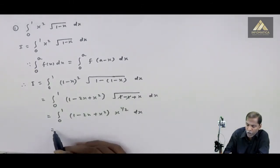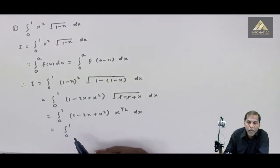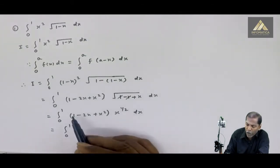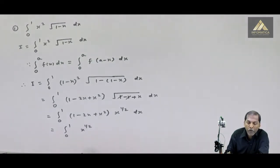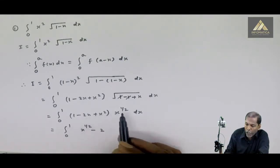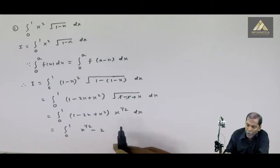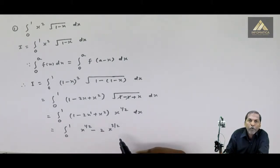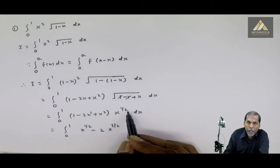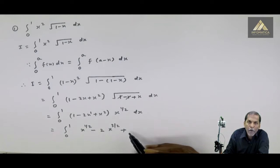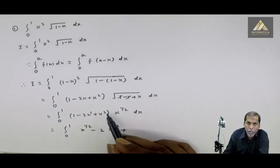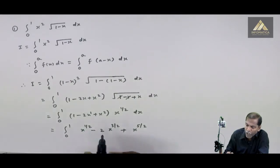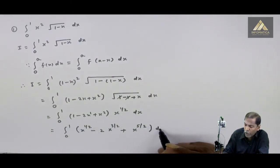Ab root x ko haam x raise 1 by 2 likh sakte hai. Is equal to integral 0 to 1. Ab x raise half se haam bracket ko multiply karte hai: x raise half into 1 gives x raise half. Uske baad minus 2x into x raise half — yaha par indices rule apply kareenge, 1 plus half = 3 by 2, toh x raise 3 by 2. Uske baad x squared into x raise half: 2 plus half = 5 by 2, toh x raise 5 by 2. Into dx.